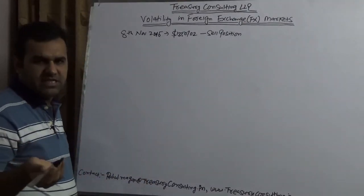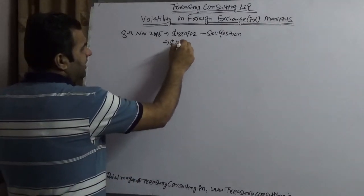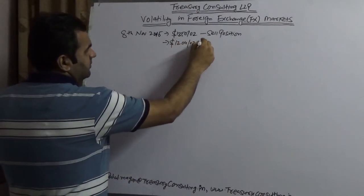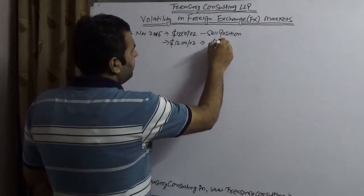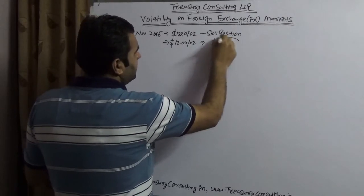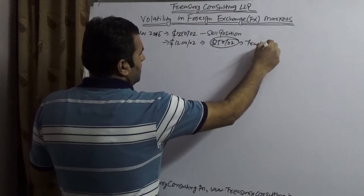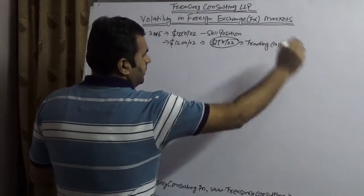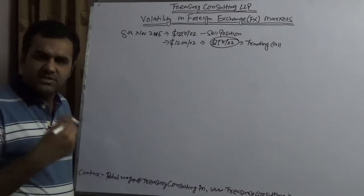Some people followed and today which is roughly 19th November, from 8th to 19th, 11 to 12 days, and today this is trading at $1,204 per ounce. People earned roughly $150 per ounce. This is our trading call and this is suddenly is going to happen.